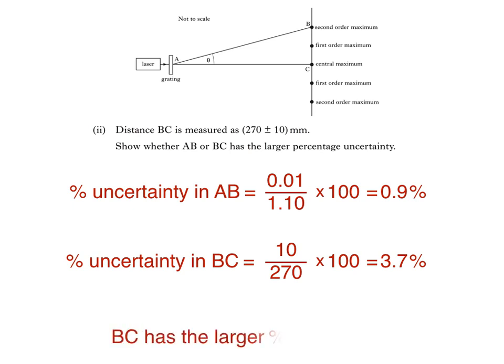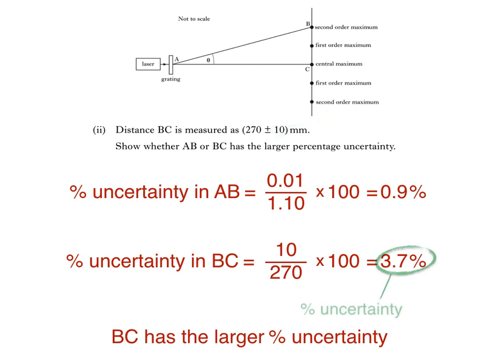We can now see that BC has the larger percentage uncertainty, but we should still write this down. Remember: if an uncertainty has the same units as the mean value, then it's an absolute uncertainty; otherwise it's a percentage uncertainty. In the next part of the question, we'll calculate the wavelength of the laser with its associated uncertainty, using the values of AB and BC. Since the percentage uncertainty in BC is greater than in AB, it should be taken as the percentage uncertainty in the wavelength.